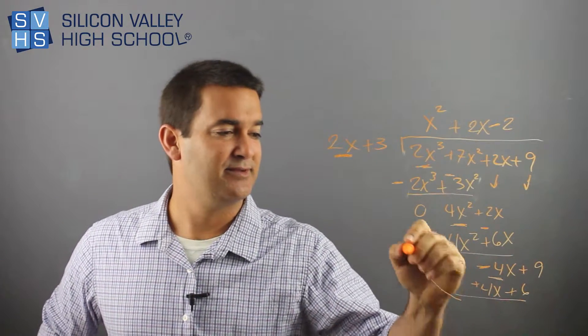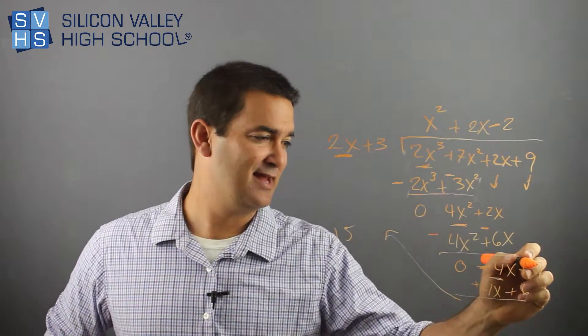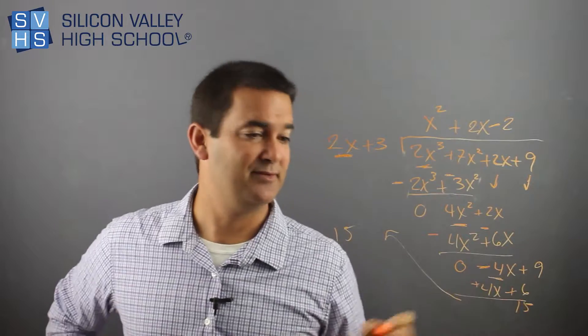If you can't see, just listen and write this on your own page. Change both signs, and I actually end up with this. My 4x is disappear. I'm going to do the math up here. And then, I'm left with 15. 9 plus 6 is 15.